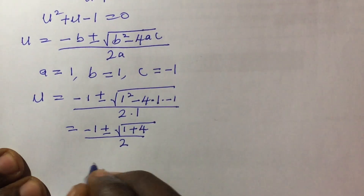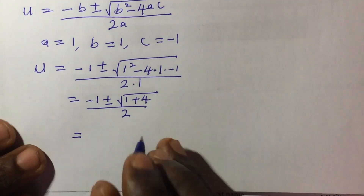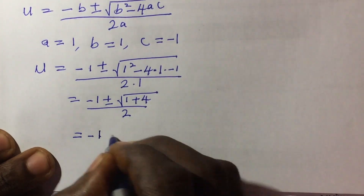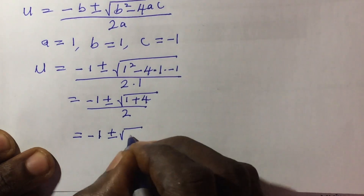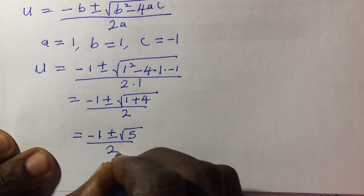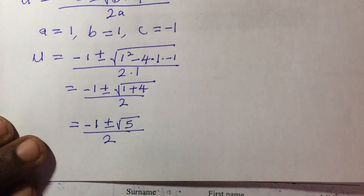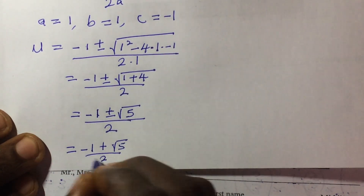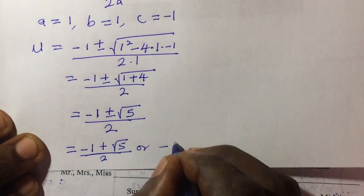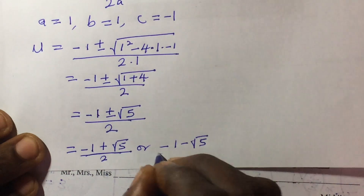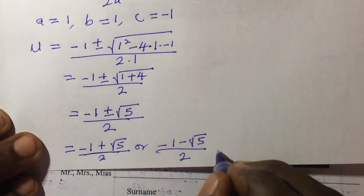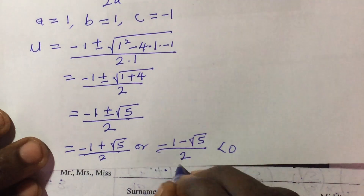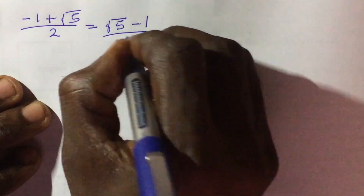Proceeding from here, this gives us minus 1 plus or minus the square root of 5, all over 2. We have two cases: case one is minus 1 plus root 5 all over 2, and case two is minus 1 minus root 5 all over 2. Case two gives a value less than 0 so we reject it. We can rewrite case one as root 5 minus 1, all over 2.